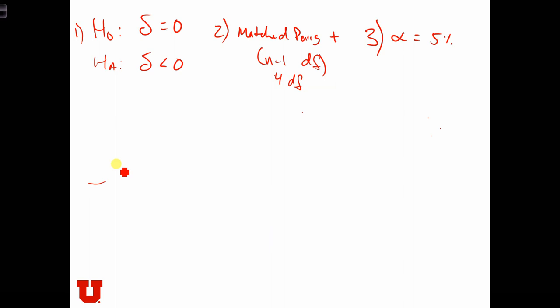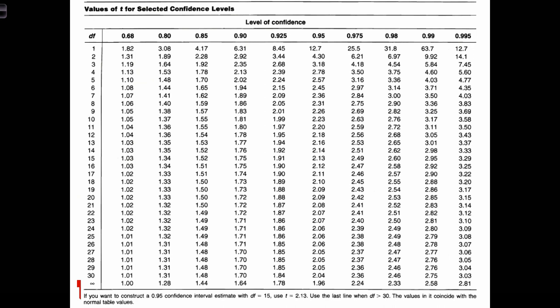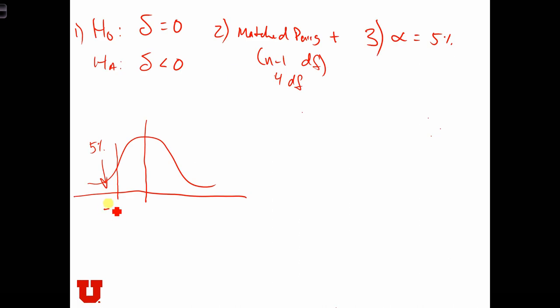So if we draw out this curve, we're going to have a left tail test. And we're going to have 5% over there. So if we use our table, we've got 4 degrees of freedom. And we need to have 5% in the tail. So we're going to use the 90% column. Because that's going to split 5 and 5 in each tail. And we have a critical value of 2.13. And of course, it has to be negative. That was step four.